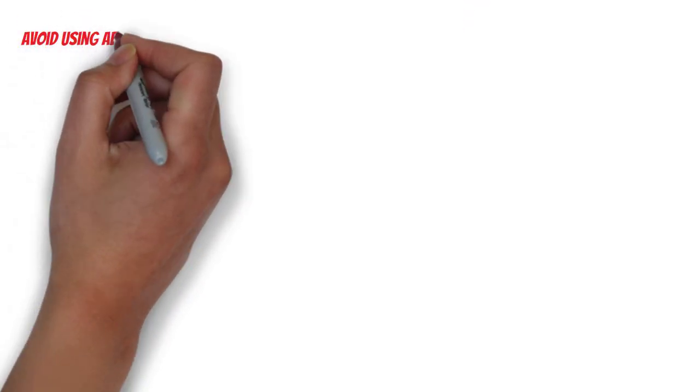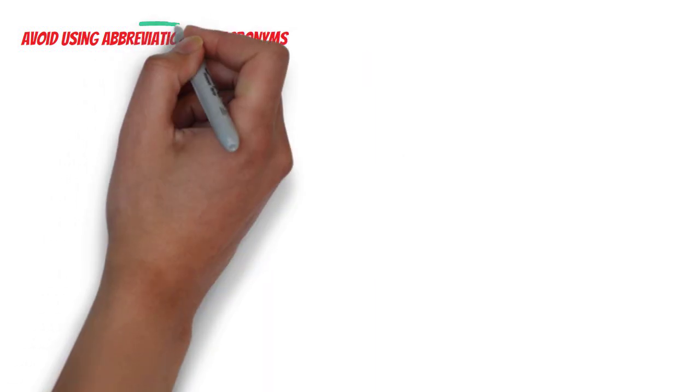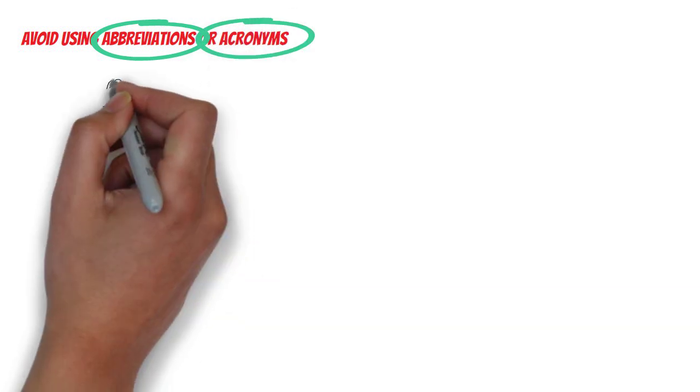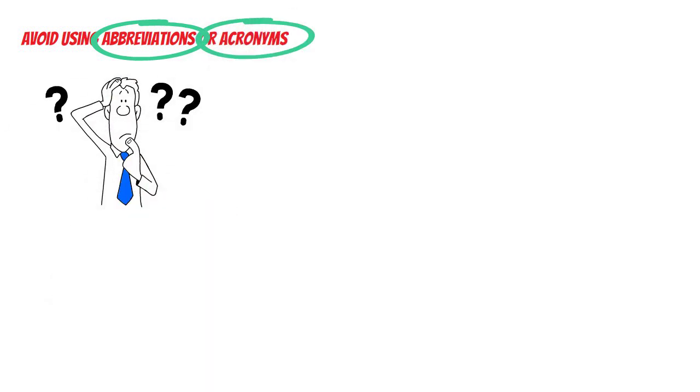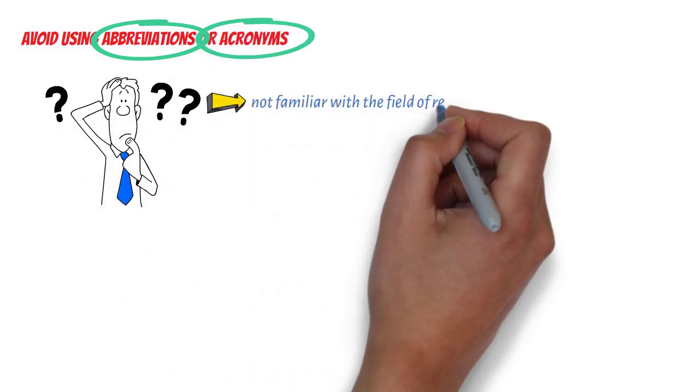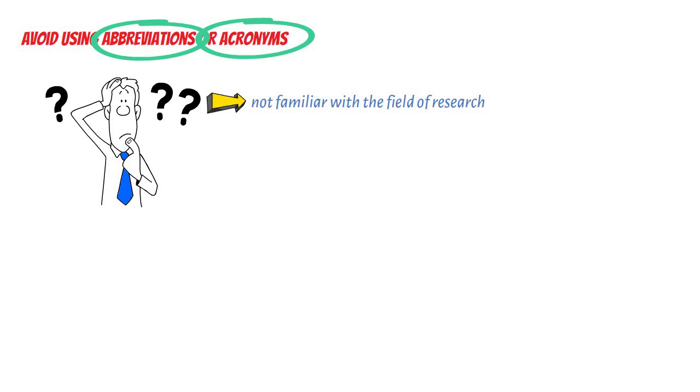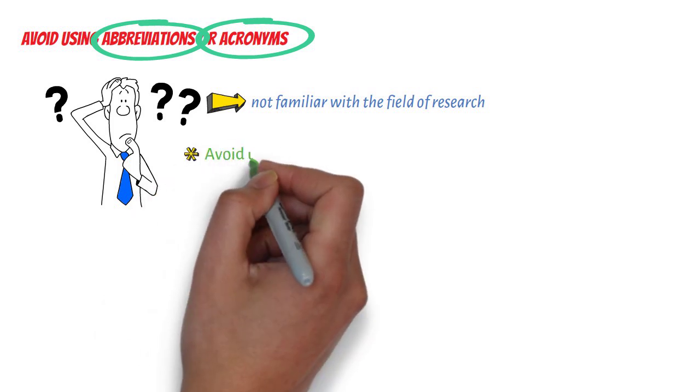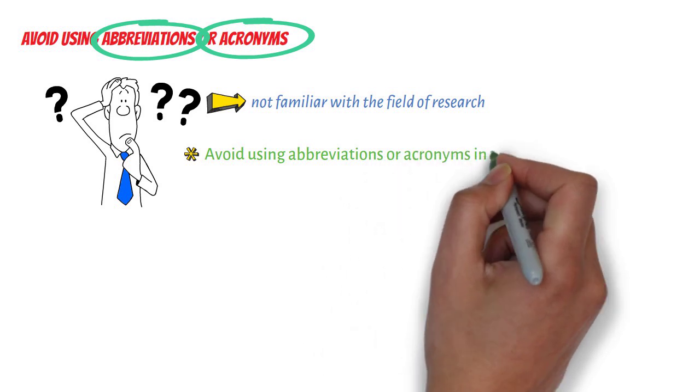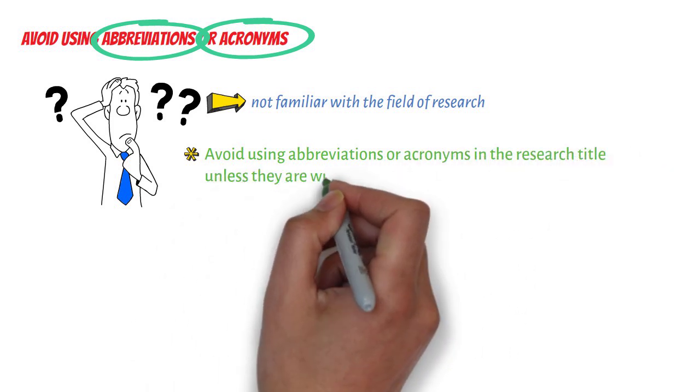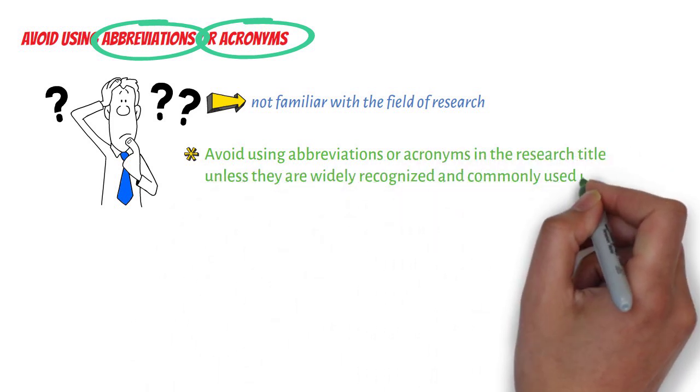Sixth, avoid using abbreviations or acronyms. Abbreviations and acronyms can be confusing for readers who are not familiar with the field of research. Avoid using abbreviations or acronyms in the research title unless they are widely recognized and commonly used in the field.